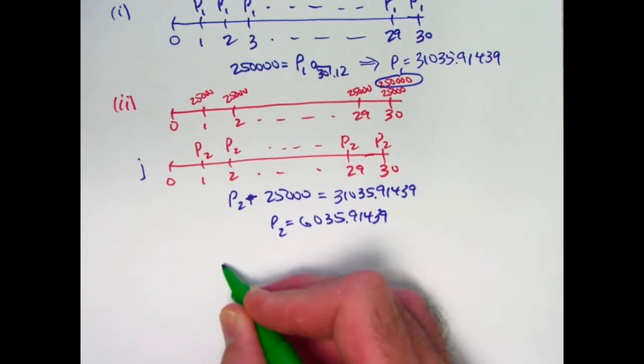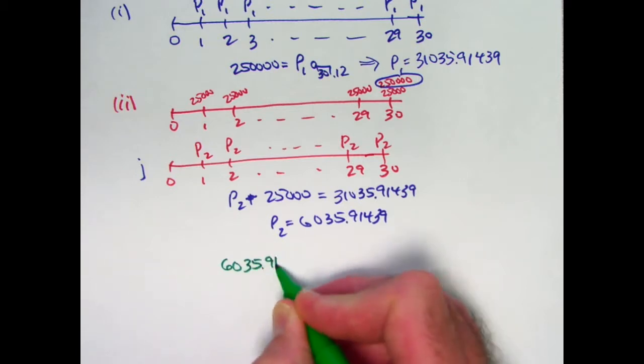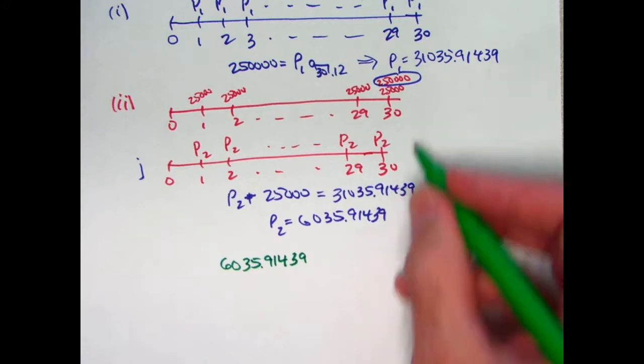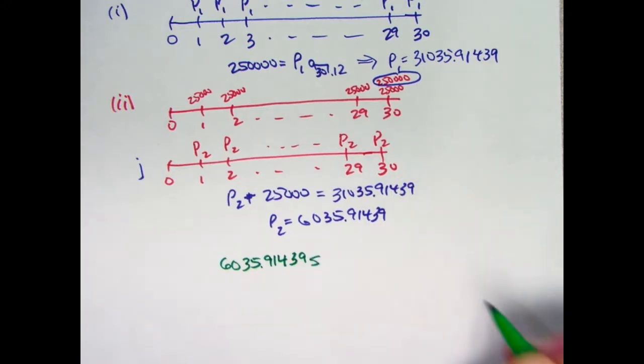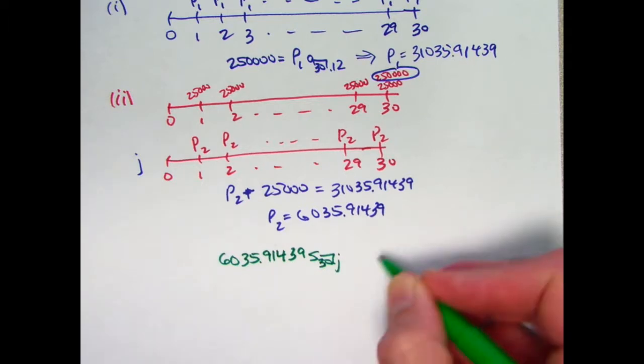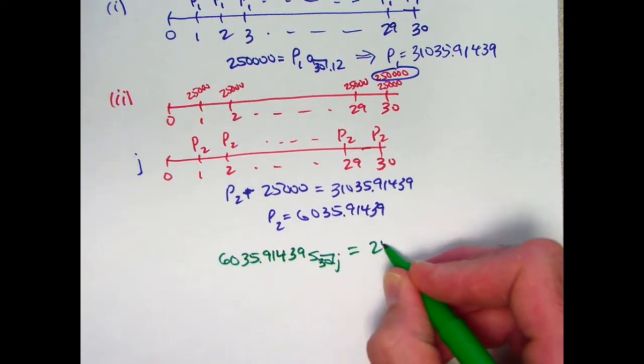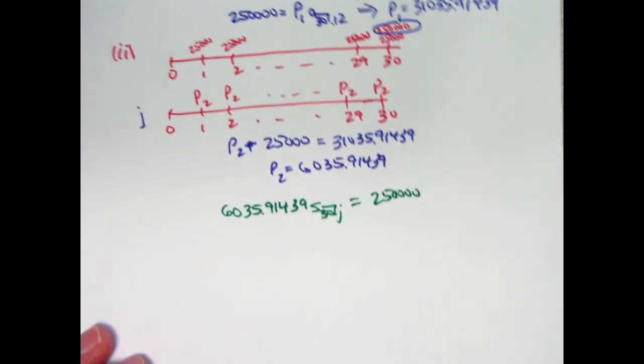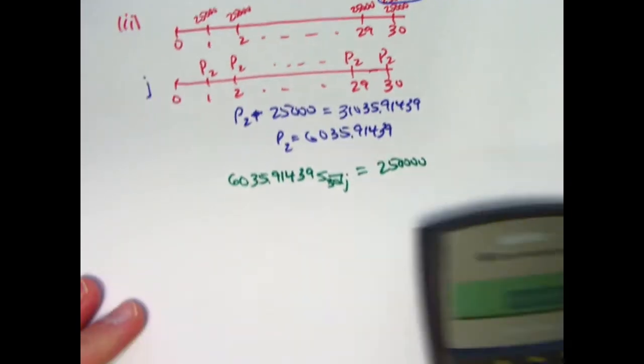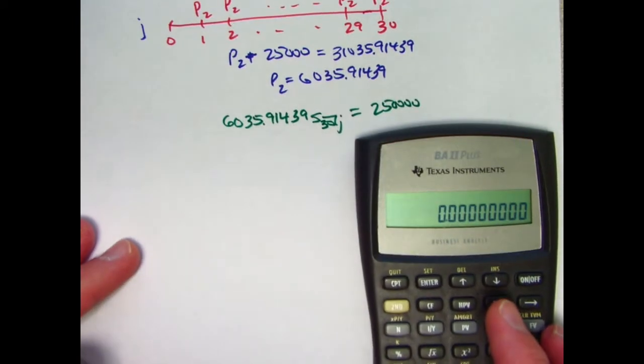So, the equation of value would be 6035.91439. We're looking at an accumulated value at time 30 equal to $250,000. So, I need an S here instead of an A. S30J must equal $250,000. Now, I could divide both sides by 6035.9, but I don't need to. I'm ready to use the financial functions.